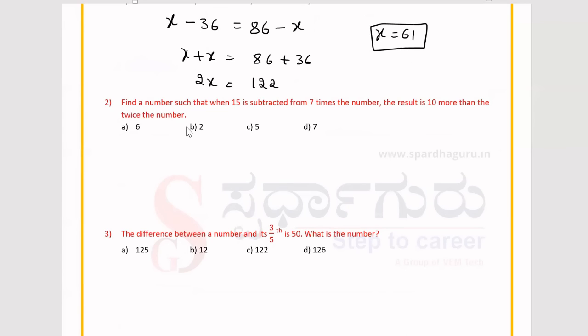15 is subtracted from this 7 times of the number, so minus 15. The result is 10, 10 more than the twice of that number, so plus 2x. Take x terms into LHS and constant numbers into RHS. So 7x minus 2x is equal to 10 plus 15. 5x is equal to 25, so x value is 5. Option C is the right answer.